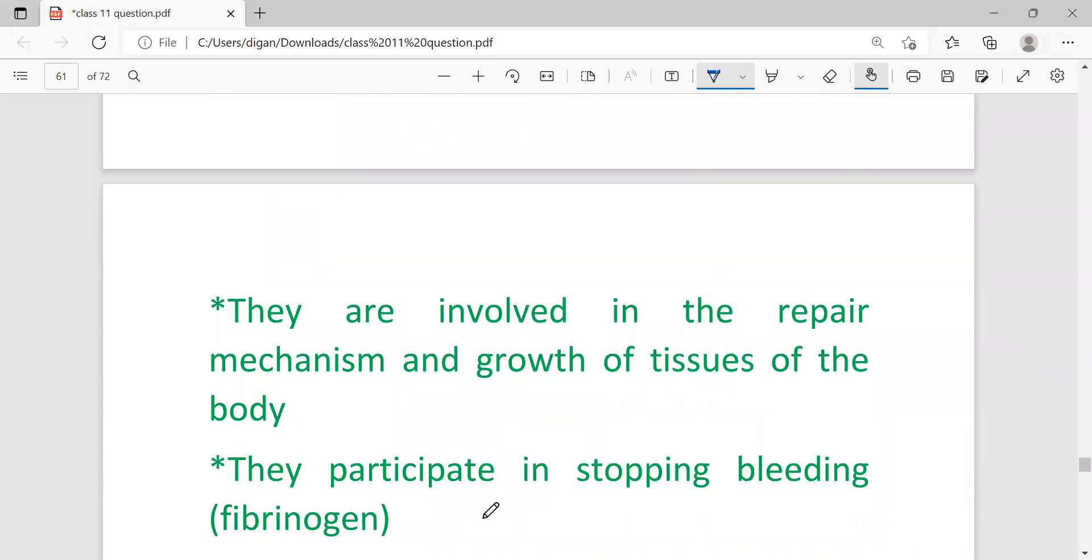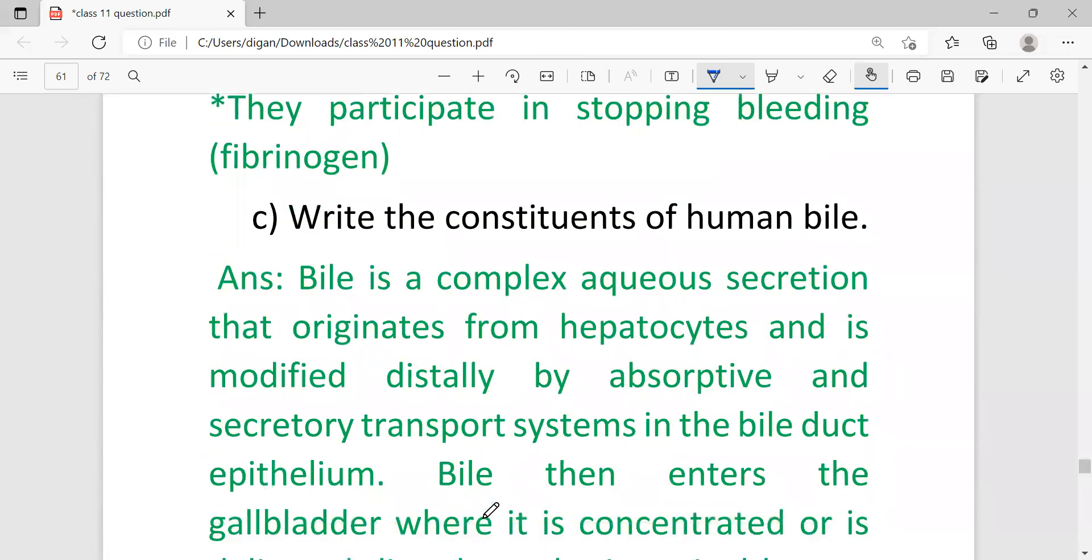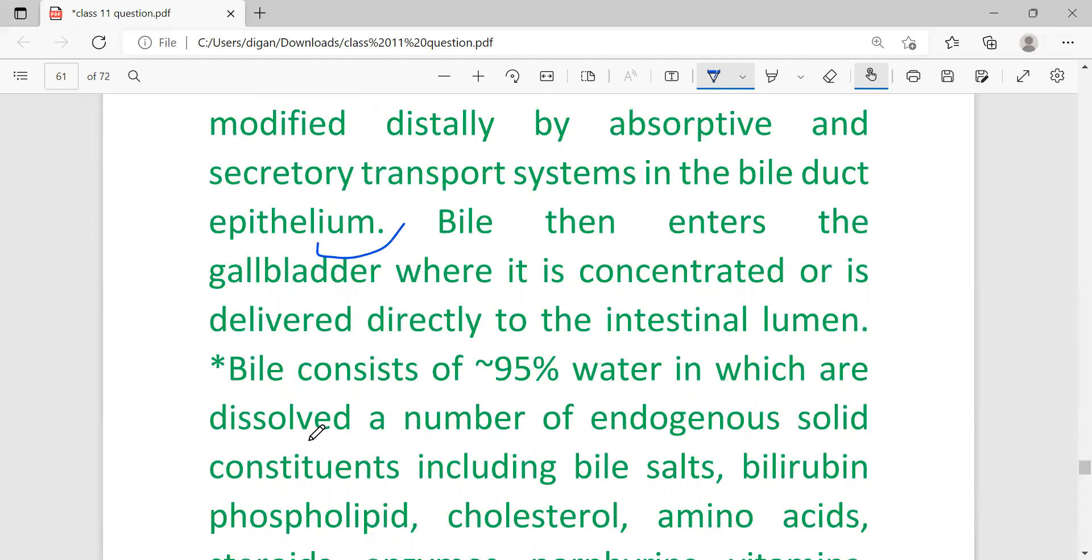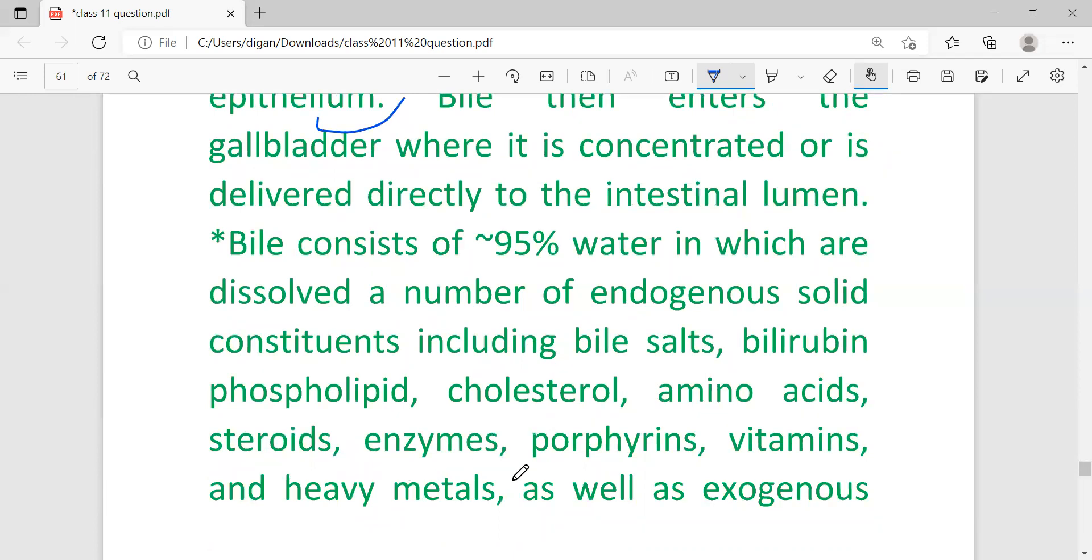Write the constituents of human bile. Bile is a complex aqueous secretion that originates from hepatocytes and is modified distally by absorptive and secretory transport systems in the bile duct epithelium. If the question asks what is bile, write up to here. If the question asks only to write the constituents, just write the next part only. Bile consists of 95% water in which are dissolved a number of endogenous solid constituents including bile salts, bilirubin, phospholipids, cholesterol, amino acids, steroids, enzymes, porphyrins, vitamins, and heavy metals, as well as exogenous drugs and environmental toxins.